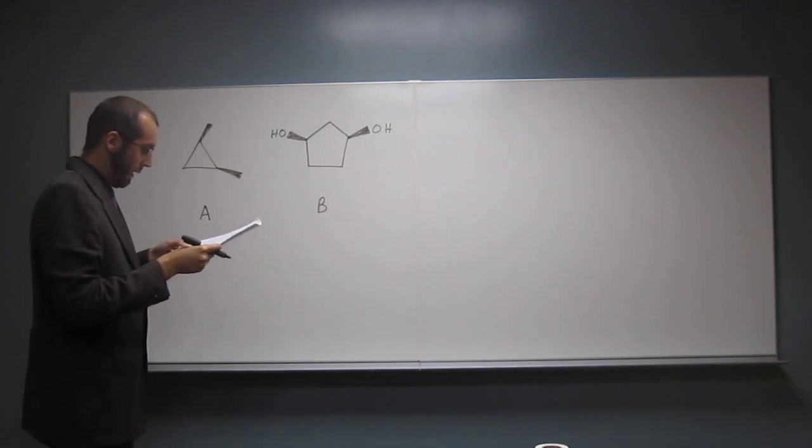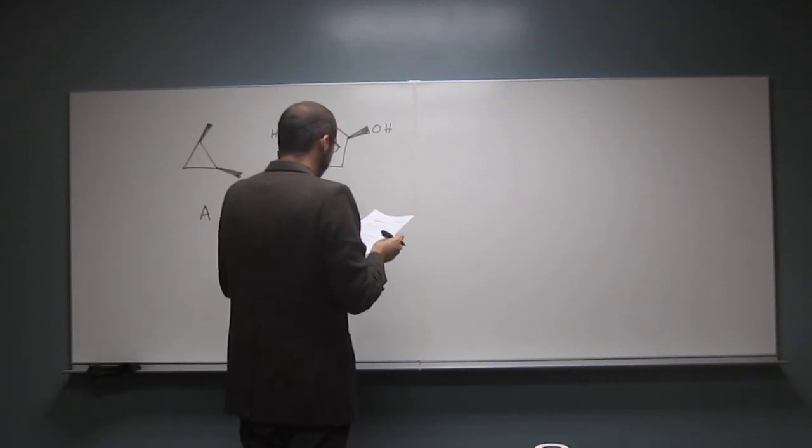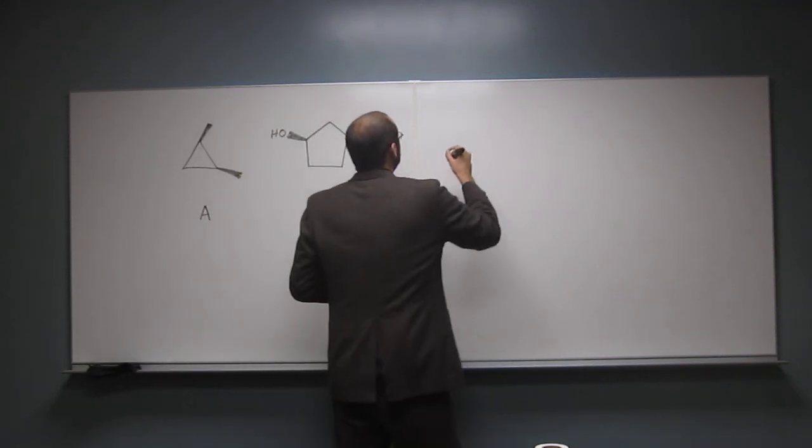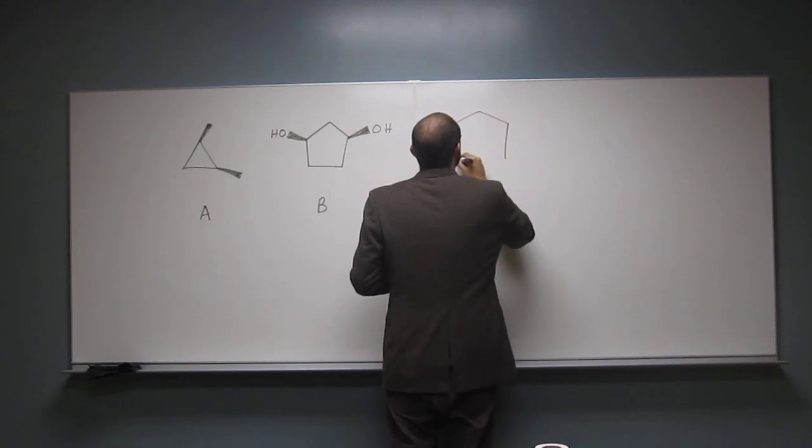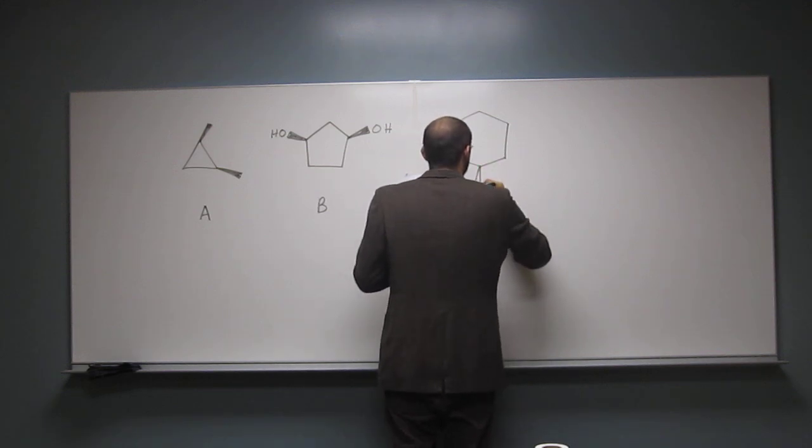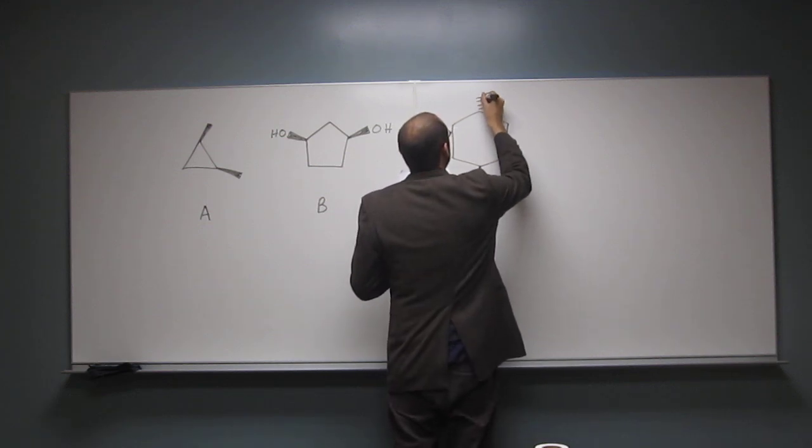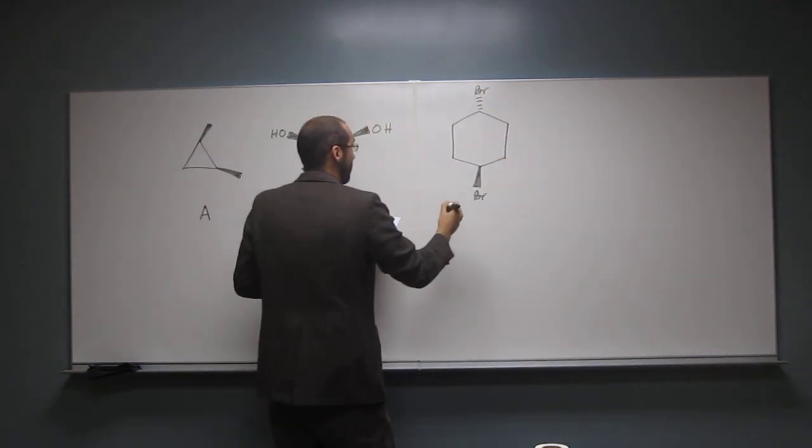And then it says cis, so we're going to make them both up. 1,3-dihydroxycyclopentane. Okay. Then the next one is trans-1,4-dibromo-cyclohexane.